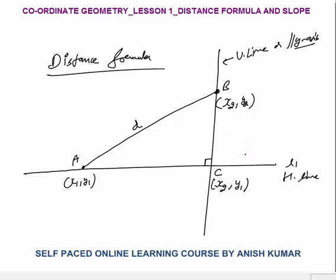The distance BC: on a vertical line, the distance between two points is simply the difference in their y-coordinates, so BC = y2 - y1. The distance AC: on a horizontal line, the distance is the difference in x-coordinates, so AC = x2 - x1.